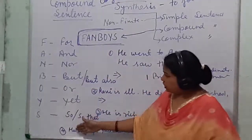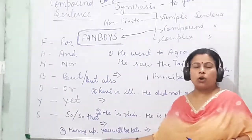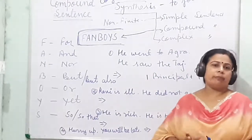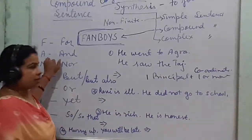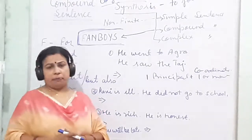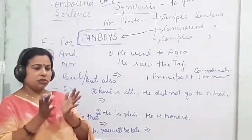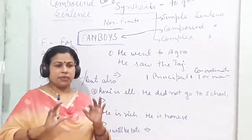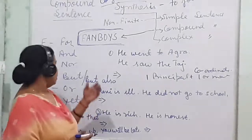अगर ये FANBOYS conjunctions principal clause और coordinate clause के बीच में हैं और sentence सही लिखा है, तो definitely compound sentence बनेगा. Synthesis करने के लिए दो या तीन clauses दिए जाएंगे — जैसे 'he went to Agra' और 'he saw the Taj.' ये दो अलग-अलग clauses हैं. इसे combine करके compound sentence बनाएंगे. यह topic twelfth standard के लिए है, लेकिन ninth onwards conjunctions का detail पढ़ना शुरू होता है.